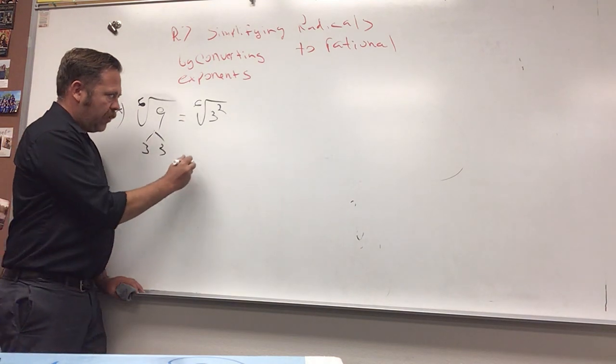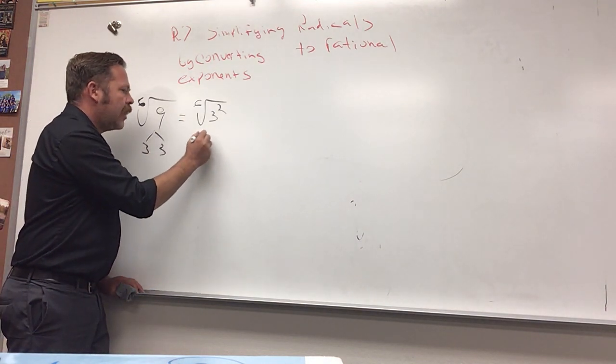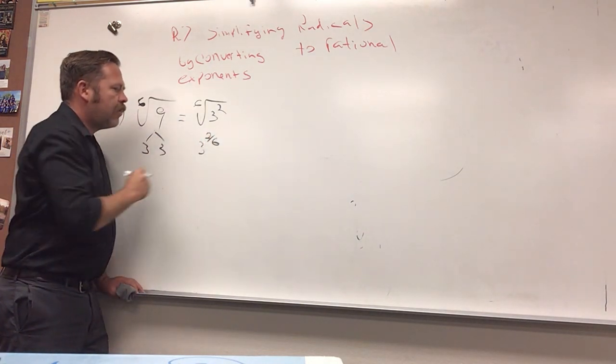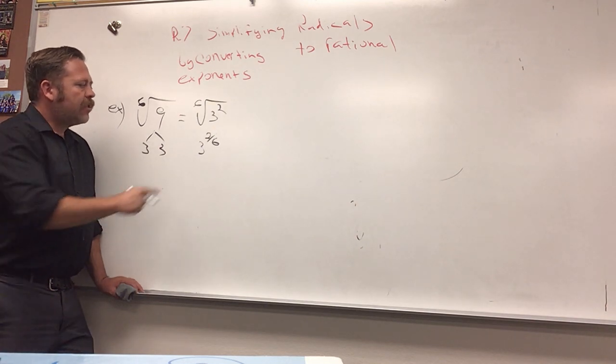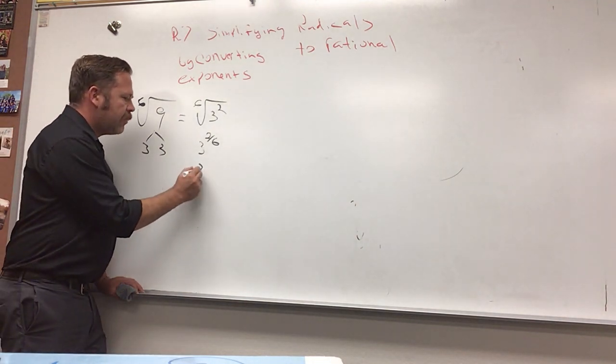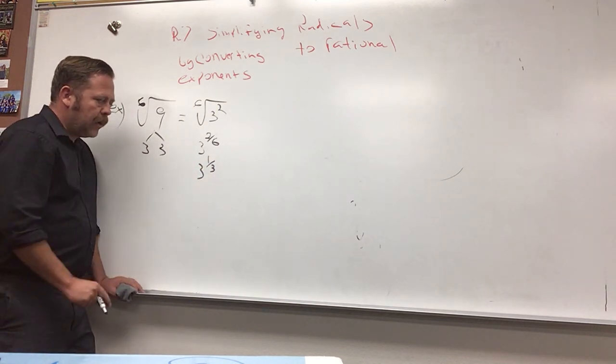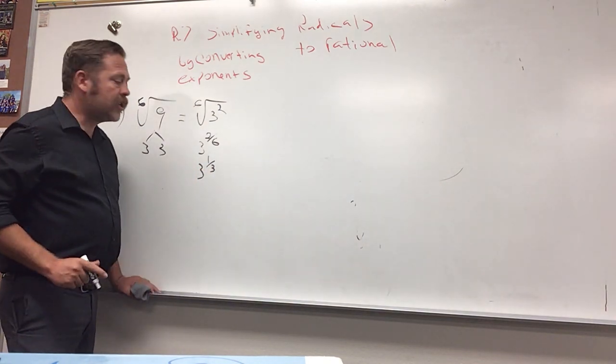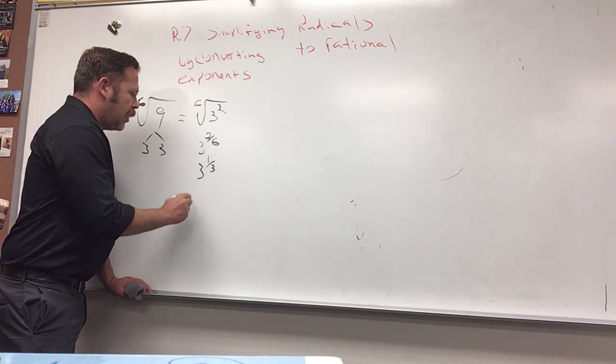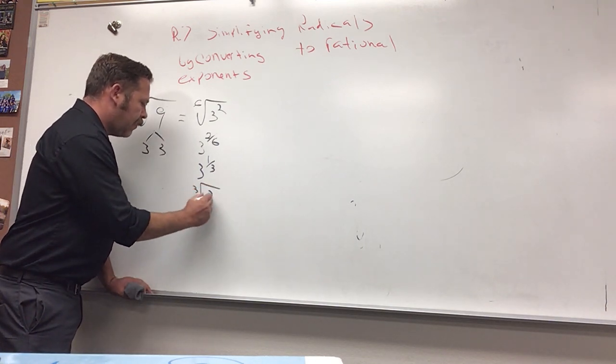So, if we wrote this, it would be three to the two-sixths if we wrote it in exponential form. And three to the two-sixths, well, that simplifies to three to the one-third. And now, let's put it back into root form. You're not allowed to leave things with fractional exponents, so we'll just call it the cubed root of three.